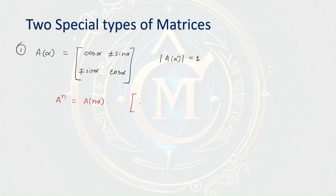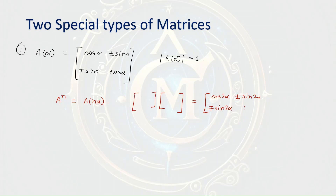That means if I multiply this matrix with itself — let's say I calculate A squared — it will become simply: cos 2 alpha, plus-minus sin 2 alpha, minus-plus sin 2 alpha, and cos 2 alpha. The same goes for any natural number n. This is a very interesting pattern that you have to note down.